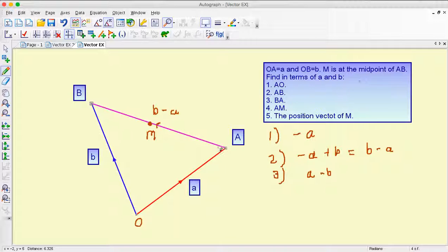I want to start at A and finish at M. So that's half of this vector here. So number four is actually quite straightforward. It's a half of b take away a half of a. So I've just taken the vector A to B but halved it because I only want to go halfway.